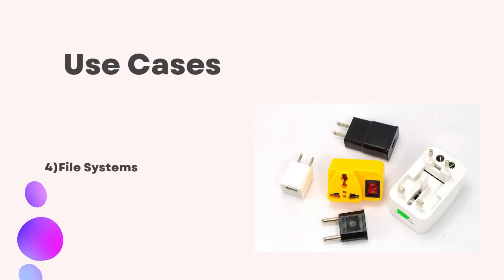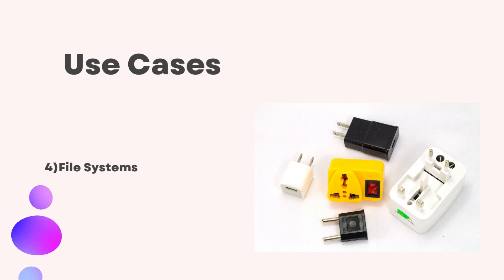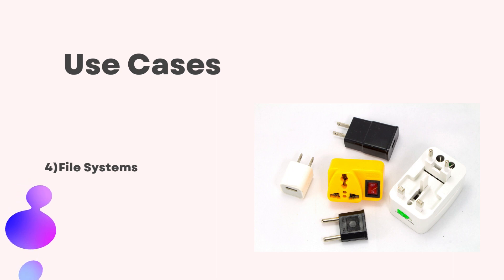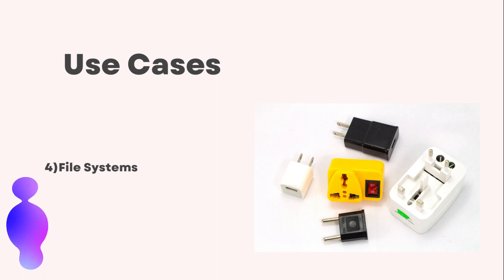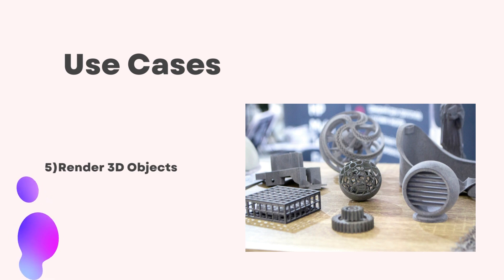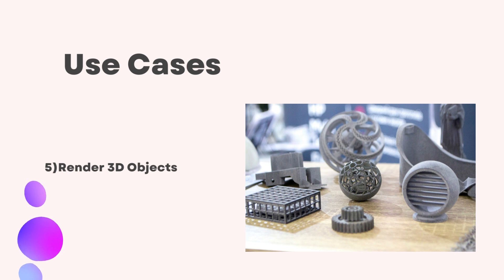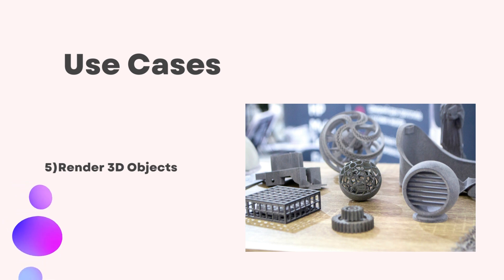Fourth, file systems: much like a tree structure represents directories containing files or other directories, the composite pattern is widely used in designing and interacting with file systems. And fifth, the render tree and three-dimensional objects: in graphic editors, where composite objects can be built from primitive shapes, the composite pattern is used to simplify the processing and manipulation of these shapes.